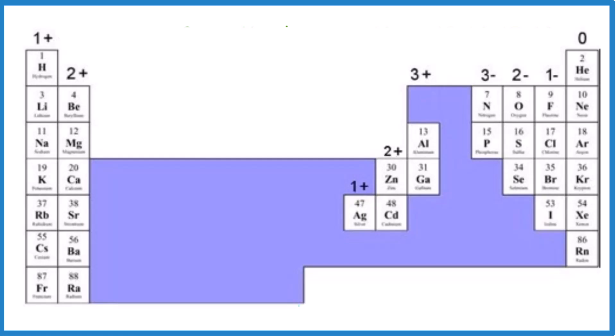I'd recommend you memorize the trend we first looked at, and then just make sure you know that some of the post-transition metals we don't know their charge, and zinc and silver — real important. That's it. That's how you predict the ionic charges on the periodic table. If you need help memorizing the polyatomic ions, jump to the next video on how to memorize the polyatomic ions. This is Dr. B. Thanks for watching.